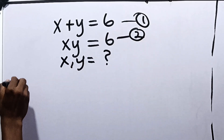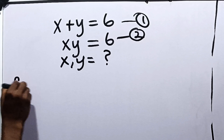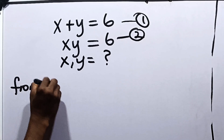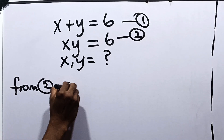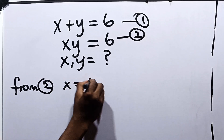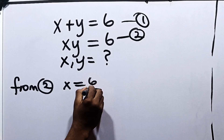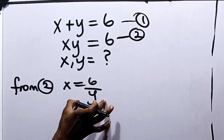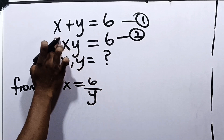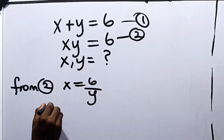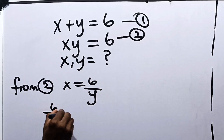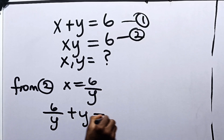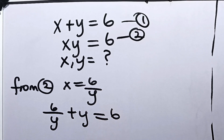From equation 2, x is equal to 6 divided by y. So we can replace x as 6 over y in equation 1. We're going to have 6 over y plus y is equal to 6.